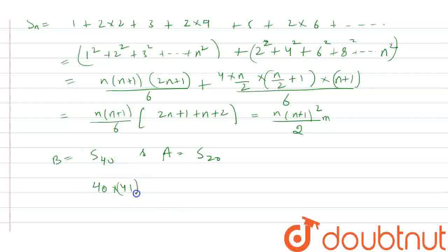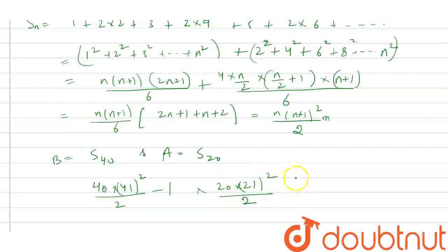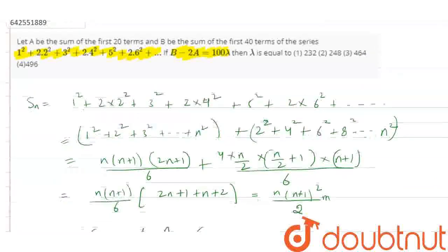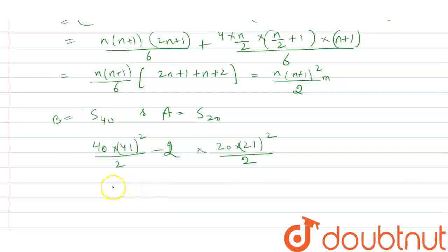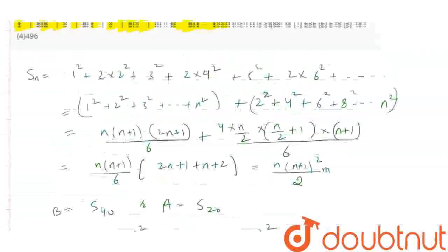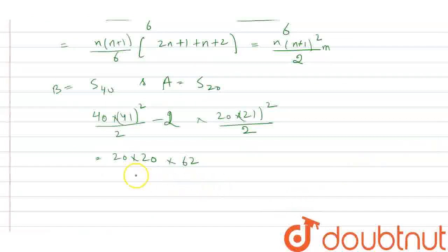We compute 40 times 41 whole squared divided by 2, minus 21 whole squared. Then for the A term we have 20 times 20 times 62. So B minus 2A equals 20 times 20 times 62, which equals 100 lambda. Therefore the value of lambda is equal to 248.